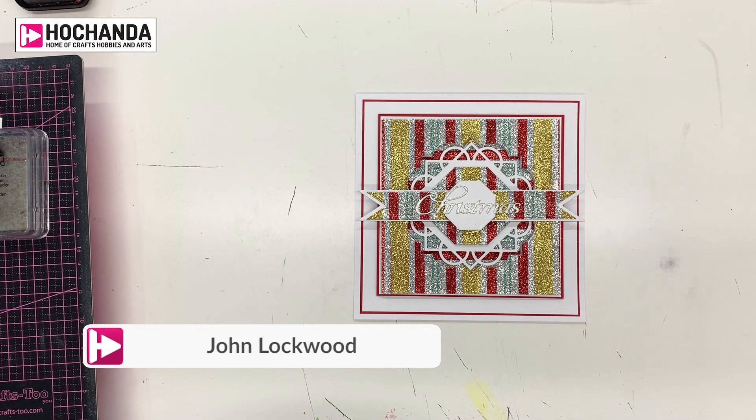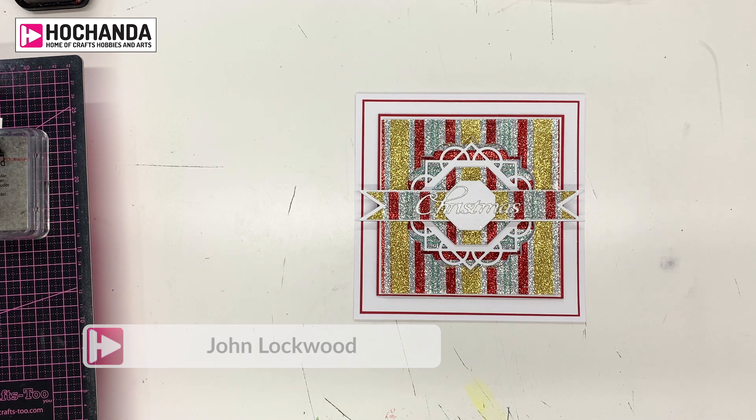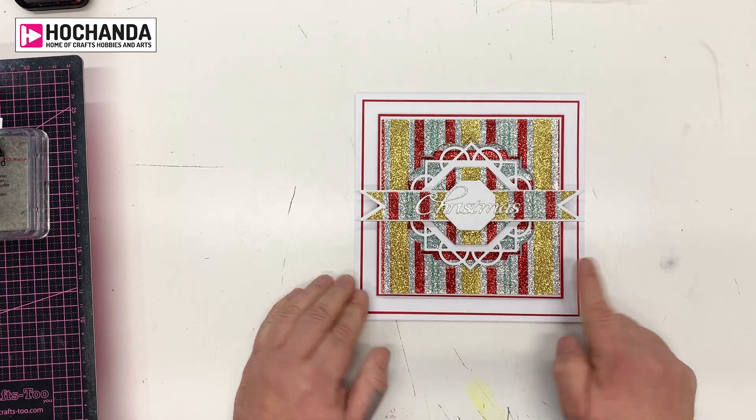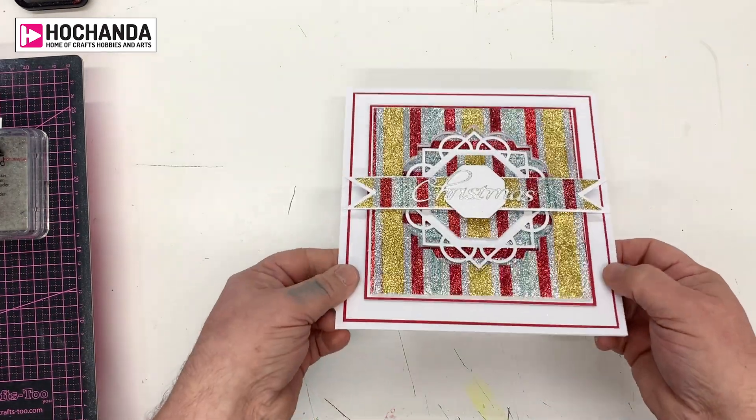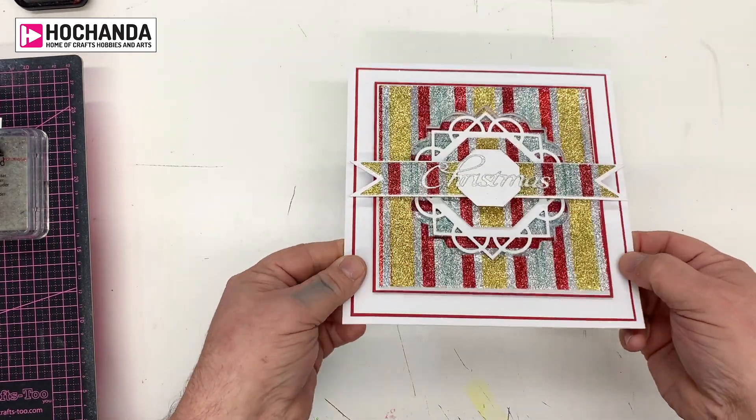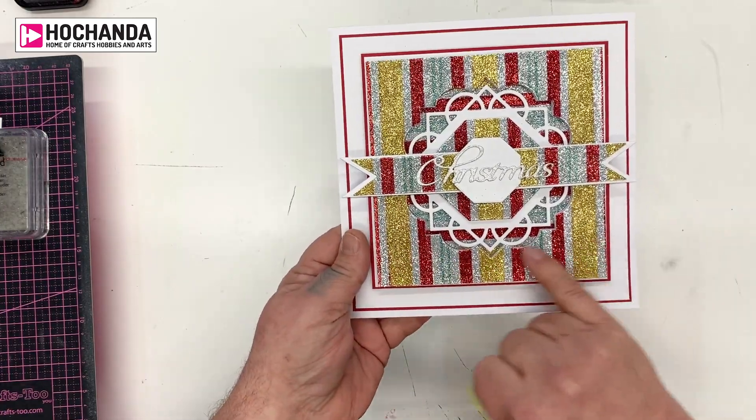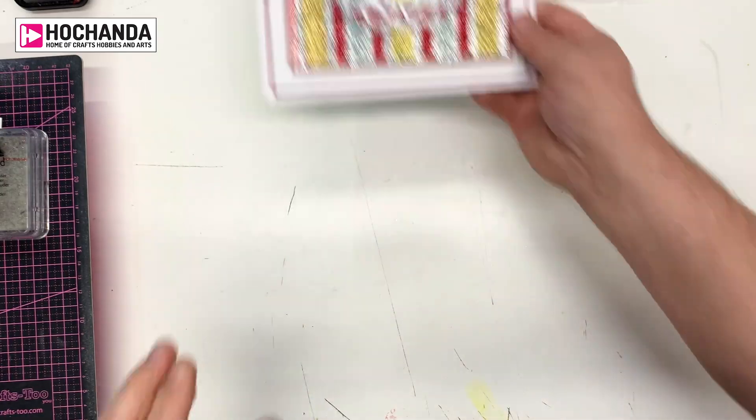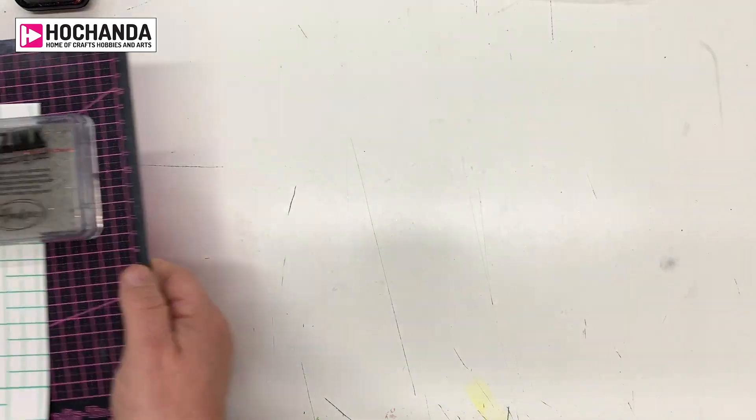Hi, I'm John Lockwood from John Next Door and Crafts 2, and in this video tutorial made exclusively for Hachanda, I'm going to show you how to make this beautiful striped glittered background. And as you can see, although this looks like a piece of paper that we've purchased, a special print, it's not. It's actually all made with glitter.